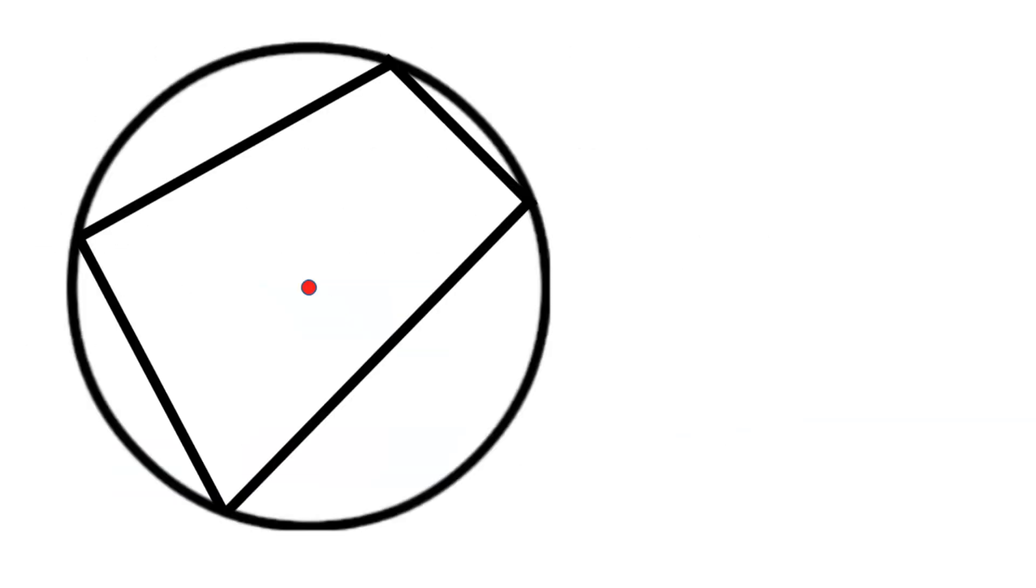If you have a circle and enclosed within the circle there is a four-sided shape, as long as all four corners are touching the circumference of the circle we have a cyclic quadrilateral and the rule